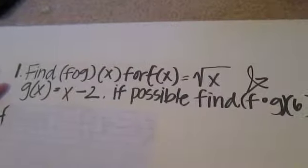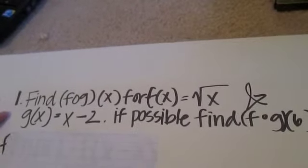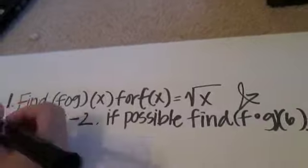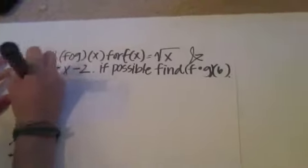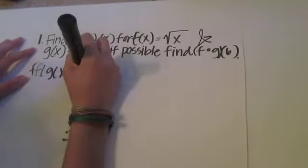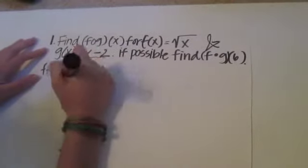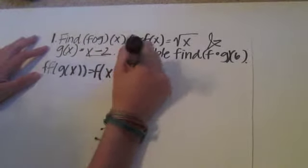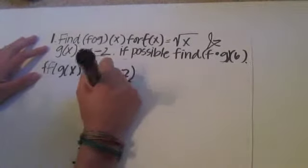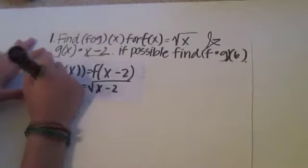The next problem says to find f of g of x when f of x is the square root of x and g of x is x minus two, and if possible find f of g of six. We first rewrite the problem: f of g of x equals f of x minus two, and at the end it's going to be the square root of x minus two. The square root comes from f of x.